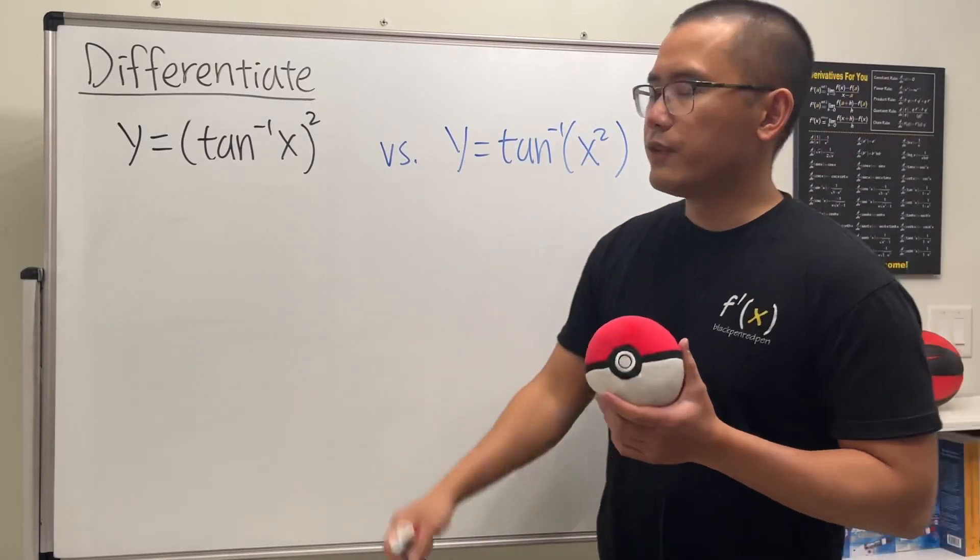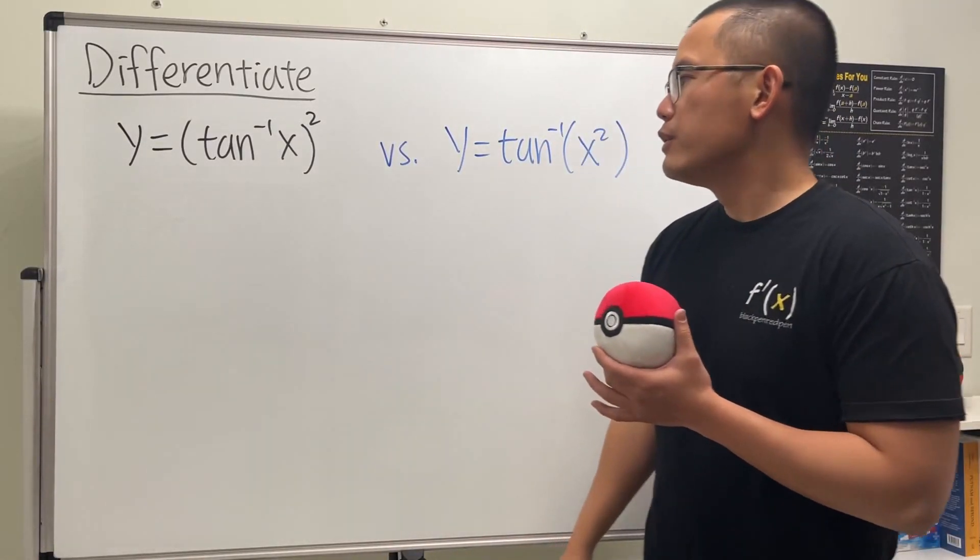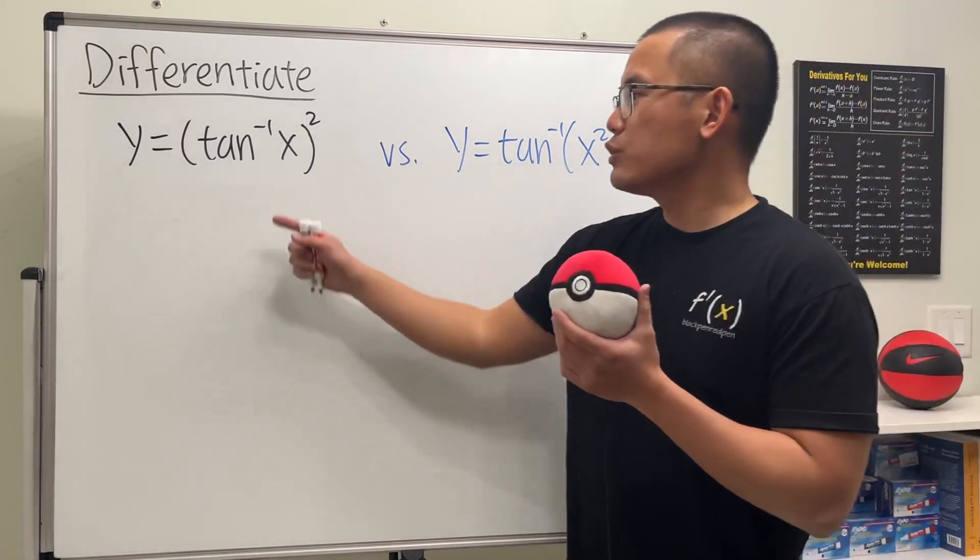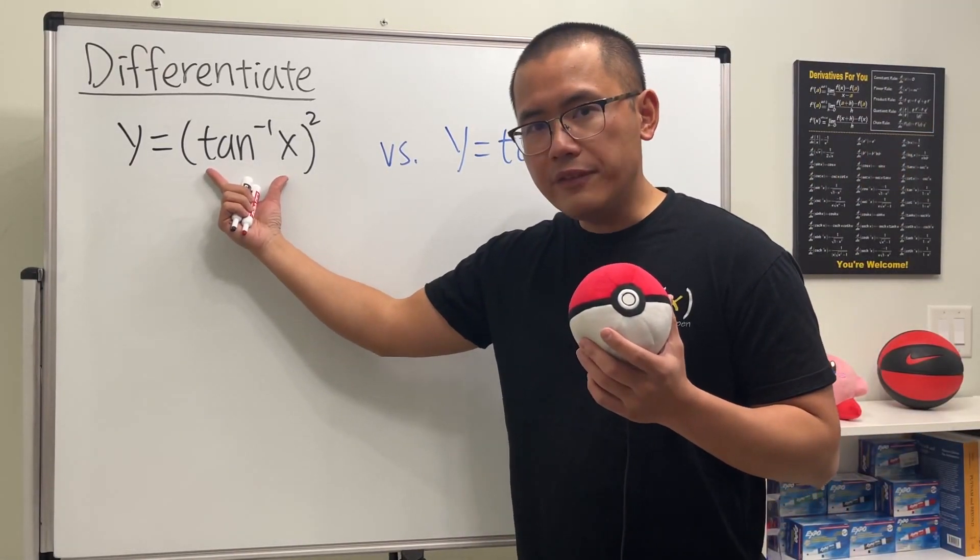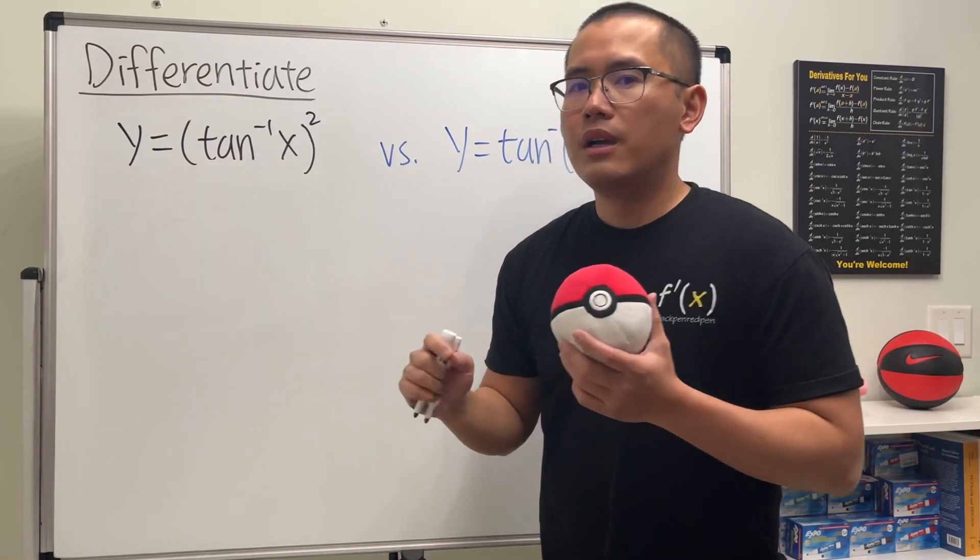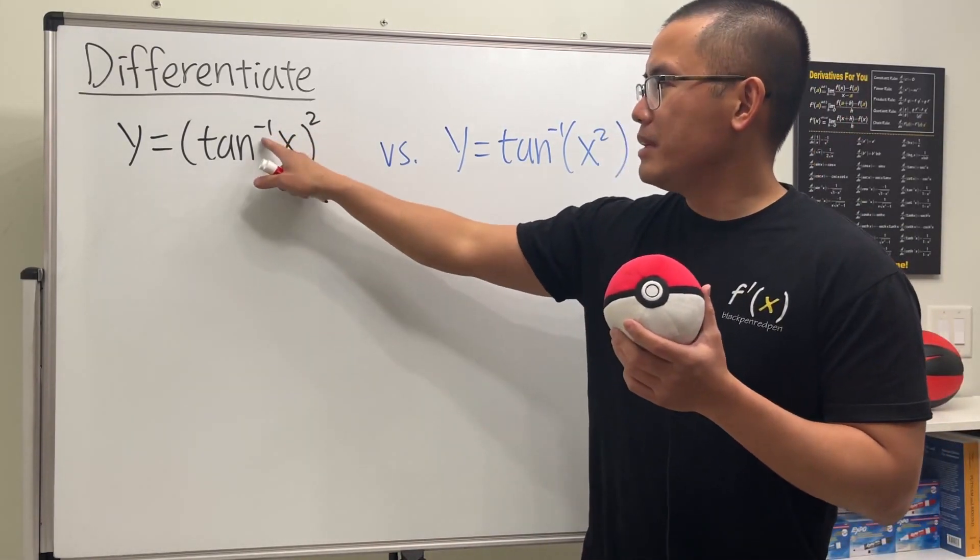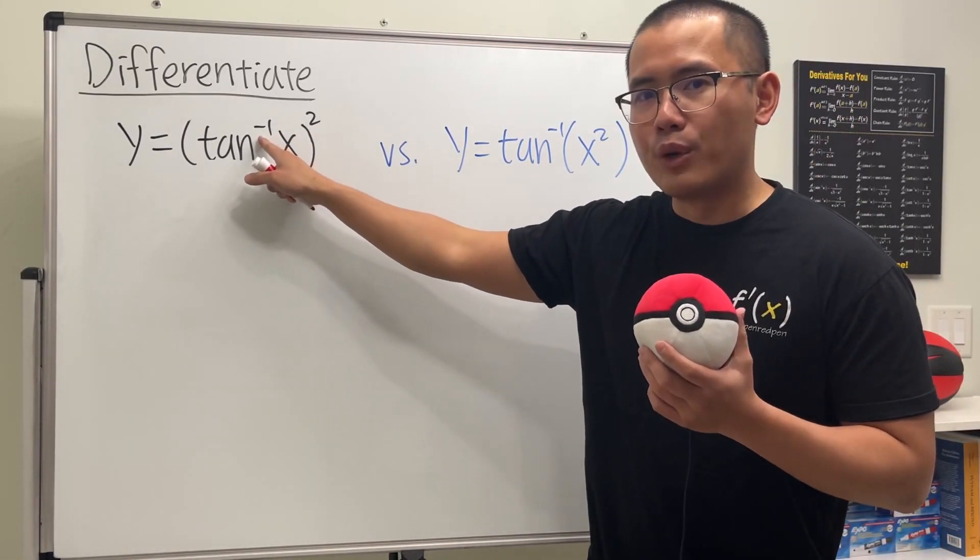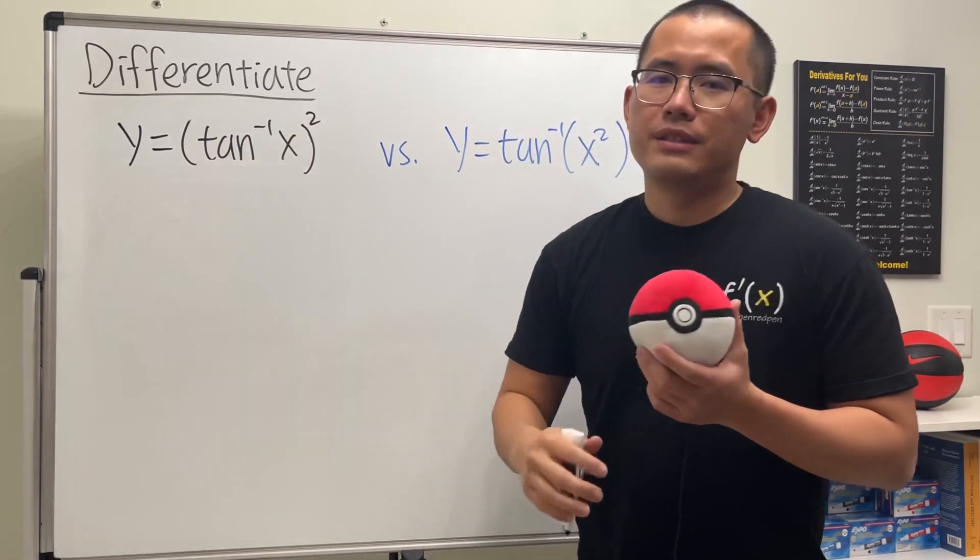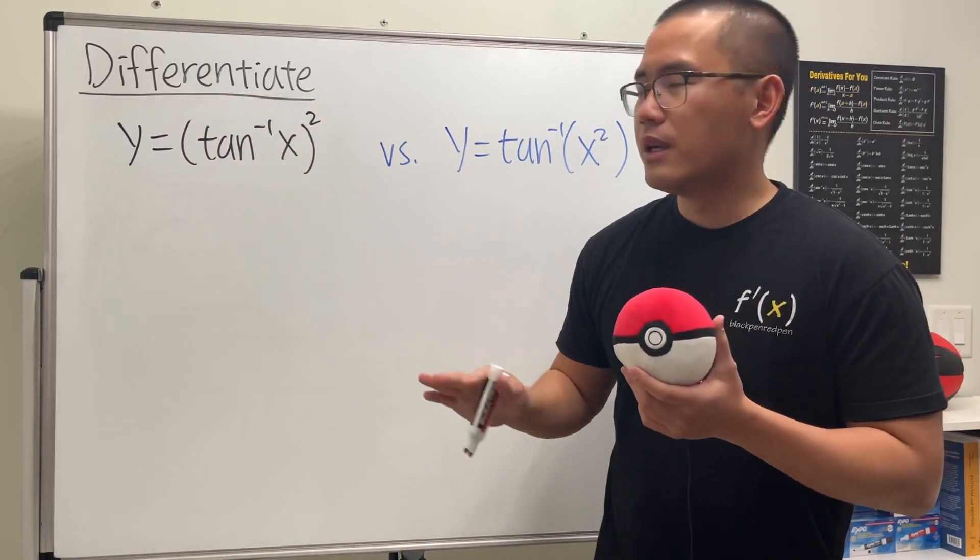Okay, so we are going to differentiate these two functions. You see that they look very similar, but they are also very different. For the first one, we have to differentiate inverse tangent in parentheses and then to the second power. First, do not multiply this and that because technically this is not a power - this is just a notation for the inverse tangent. Some people prefer to write it as arctan, but we'll just deal with this right here.